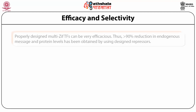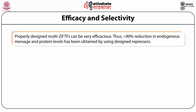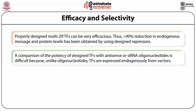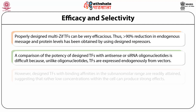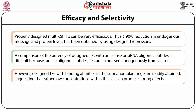Efficacy and selectivity of designed transcription factors: properly designed multi-zinc finger transcription factors can be very efficacious. More than 90% reductions in endogenous mRNA and protein levels have been obtained by using designed repressors. A comparison of the potency of designed transcription factors versus siRNA oligonucleotides is difficult because unlike oligonucleotides, transcription factors are expressed endogenously from vectors. However, designed transcription factors with binding affinities in the subnanomolar range are readily attained, suggesting that rather low concentrations within the cell can produce strong effects.